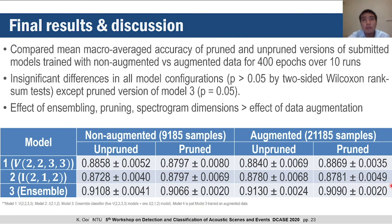We also looked at the effect of the data augmentation methods on both the pruned and unpruned models. The table summarises mean macro-averaged accuracy for pruned and unpruned versions when trained on augmented versus non-augmented data. Although there are slight differences in the means, they were not significant based on two-sided Wilcoxon rank-sum tests, except for the pruned version of model 3, which was marginally significant with a p-value of 0.05. Hence, the effects of ensembling, pruning, and choice of spectrogram dimensions on model performance greatly outweigh any contribution from the data augmentation method used.